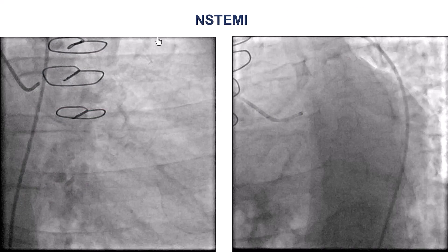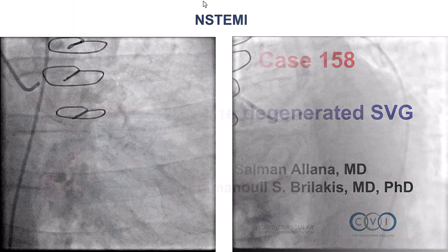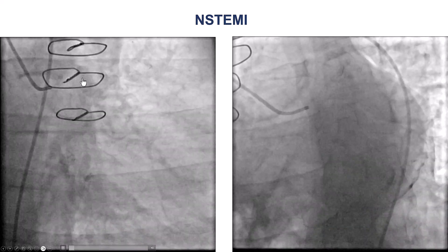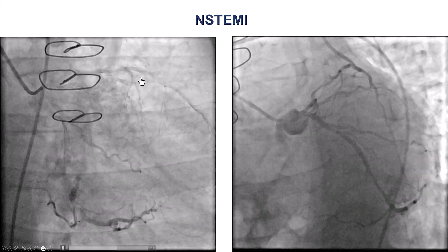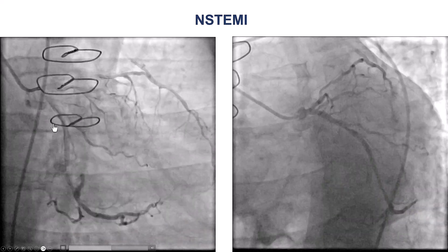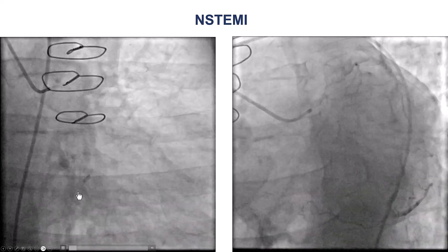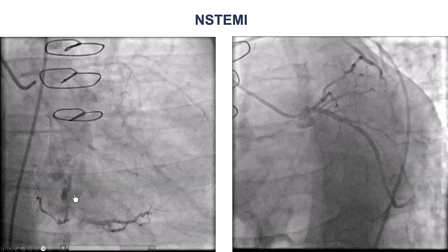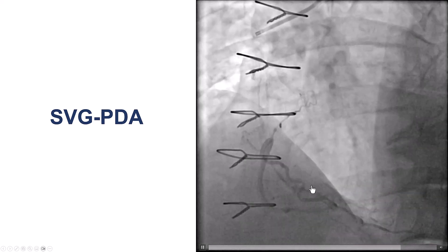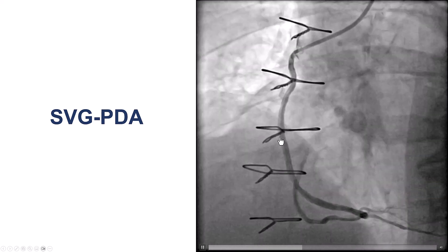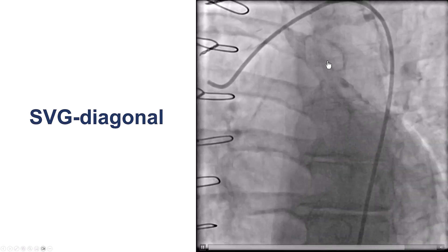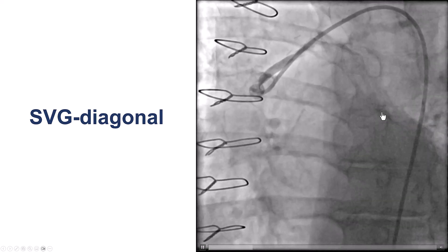The patient was an elderly gentleman who presented with non-ST elevation myocardial infarction. Diagnostic angiography shows a significant lesion in the proximal LAD. However, there is a patent LIMA. There is a circumflex with a moderate proximal lesion and a chronically occluded Saphenous Vein Graft going to the obtuse marginal branch. We do have a patent vein graft to the PDA. The native RCA was chronically occluded. We do have a degenerated Saphenous Vein Graft to the diagonal with multiple lesions and TIMI 2 antegrade flow.